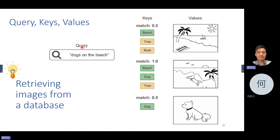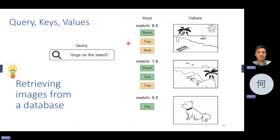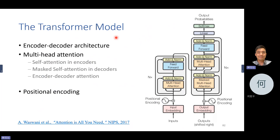A new input is a query. The query tries to match with the keys. For example, a query for 'dog on the beach': the first image is beach only — no dog — so it scores 0.5. The second has beach and dog — perfect match, score 1.0. The third has only a dog — score 0.5. By this approach, they find the attention of the input data. The task is to learn the query and the keys — that's the basic idea of attention.